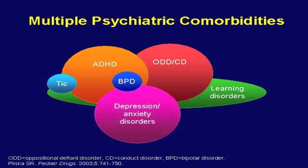ADHD has many comorbidities, the most common being learning disorders — anywhere from 20% to 60% of kids with ADHD also have one or more learning disabilities. There is a significant risk of anxiety and/or depression, as well as oppositional defiant disorder and conduct disorder. ADHD also exists in the same genetic neighborhood as tic disorders, so kids with ADHD are often at higher risk for tic disorders.